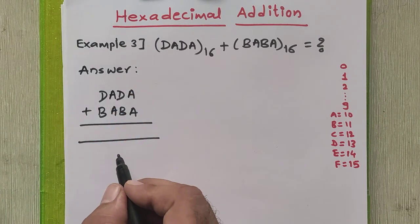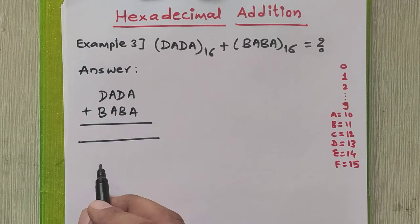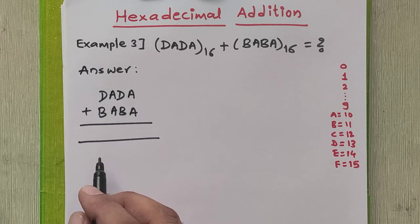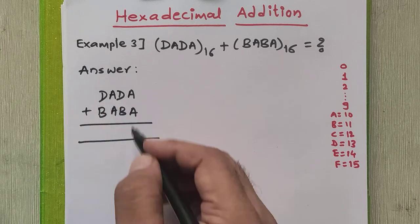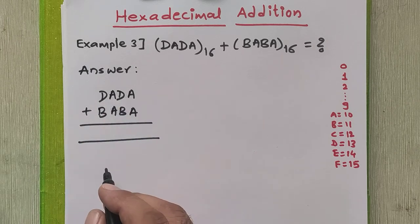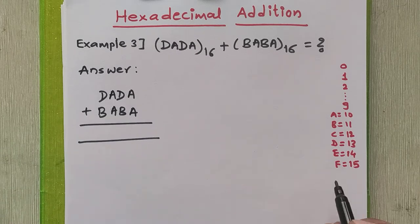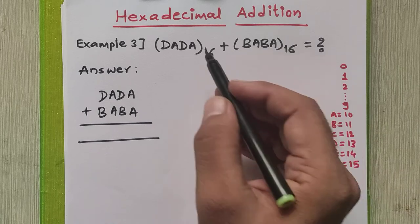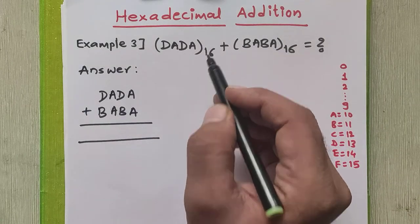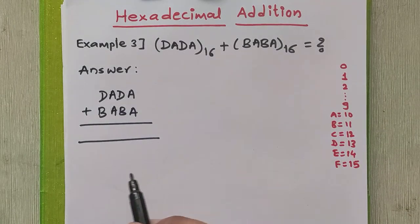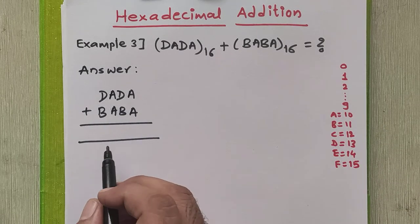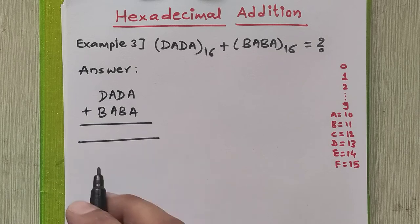Rule two: if the result obtained in the process of addition has any invalid digits, then we have to subtract the base of the system — that is 16 — from each and every invalid digit in the result to get the actual answer.